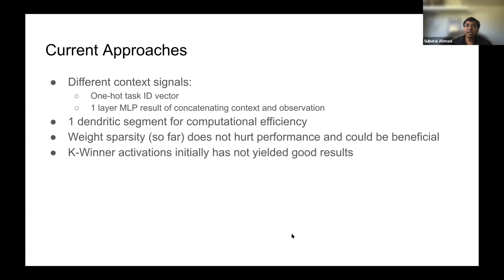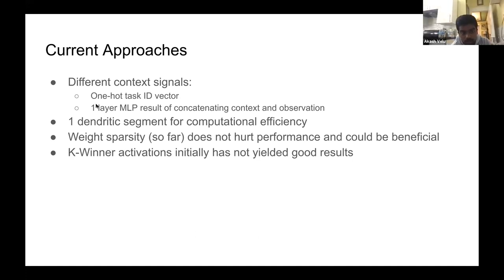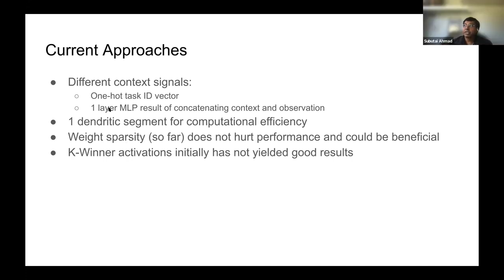The reason one dendritic segment works is because it's a one-hot encoding — one dendritic segment is just as good as having 10 segments, because you can just have whatever unit you need on that segment. However, I've mostly moved away from using one-hot as the direct context; I'm more using a dense vector coming out of an MLP. With a dense context, the number of segments does make a difference.